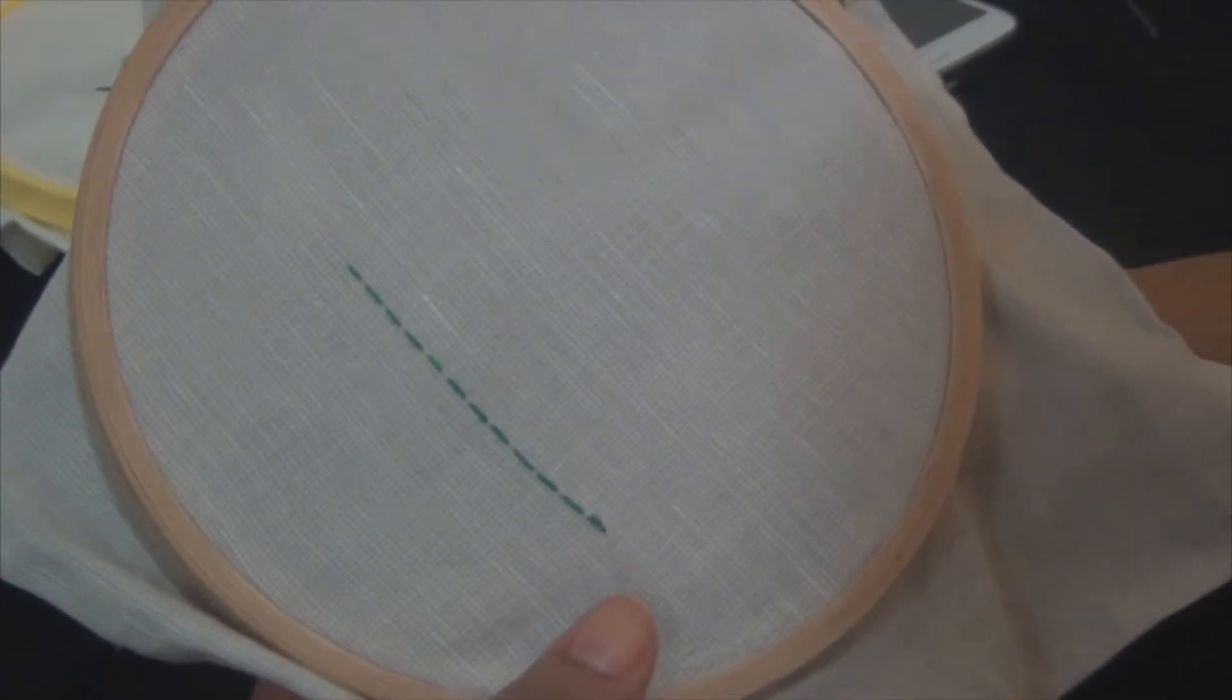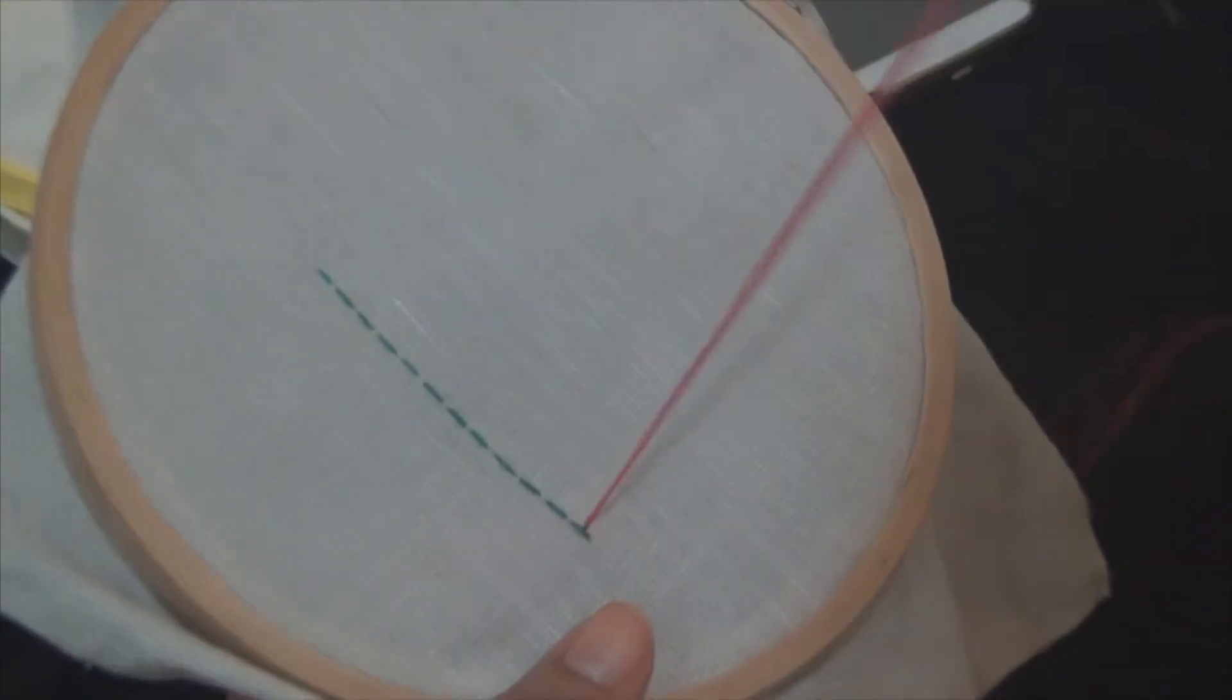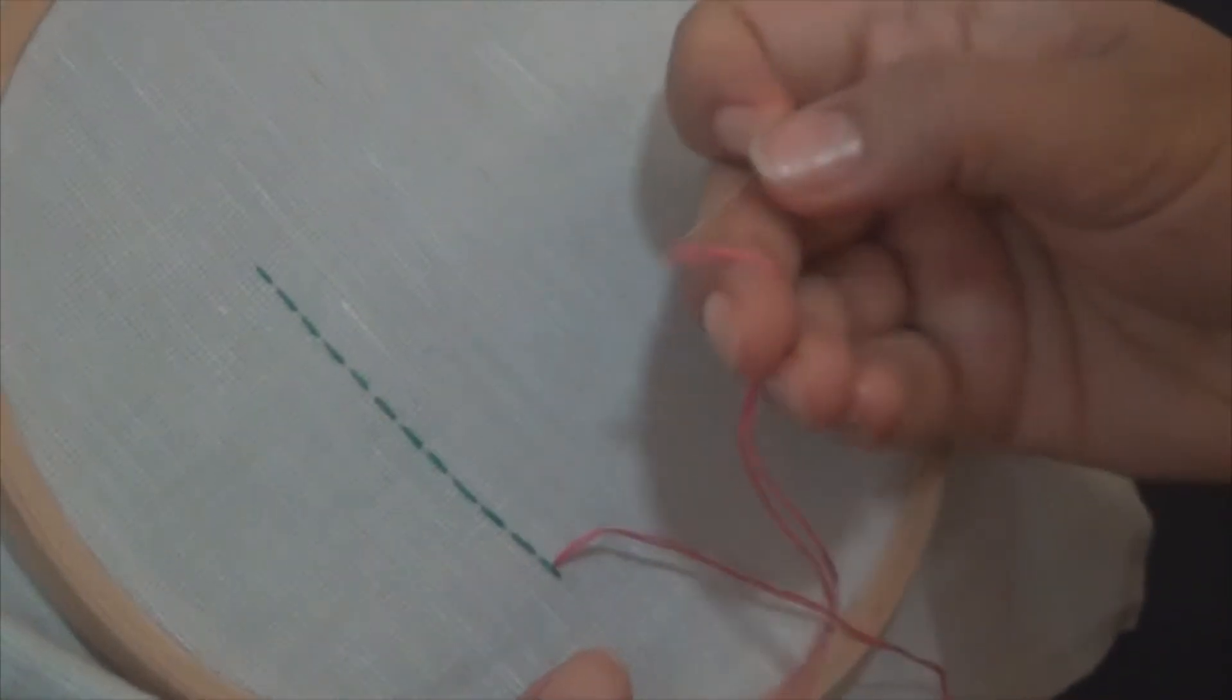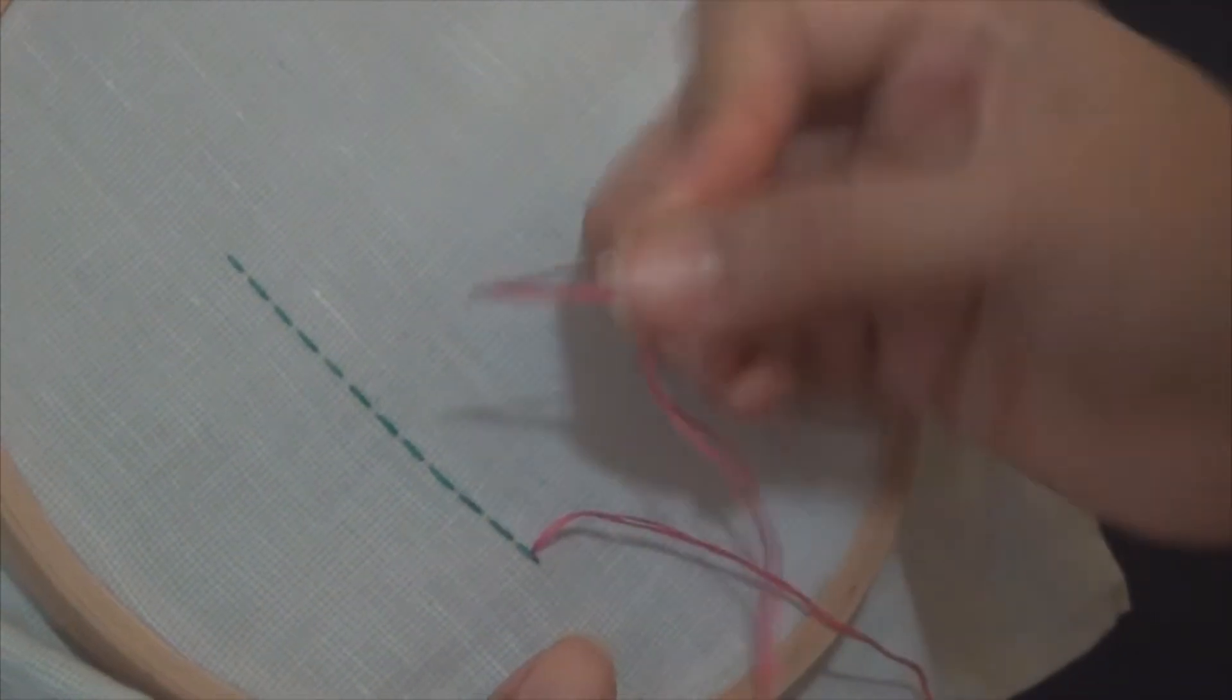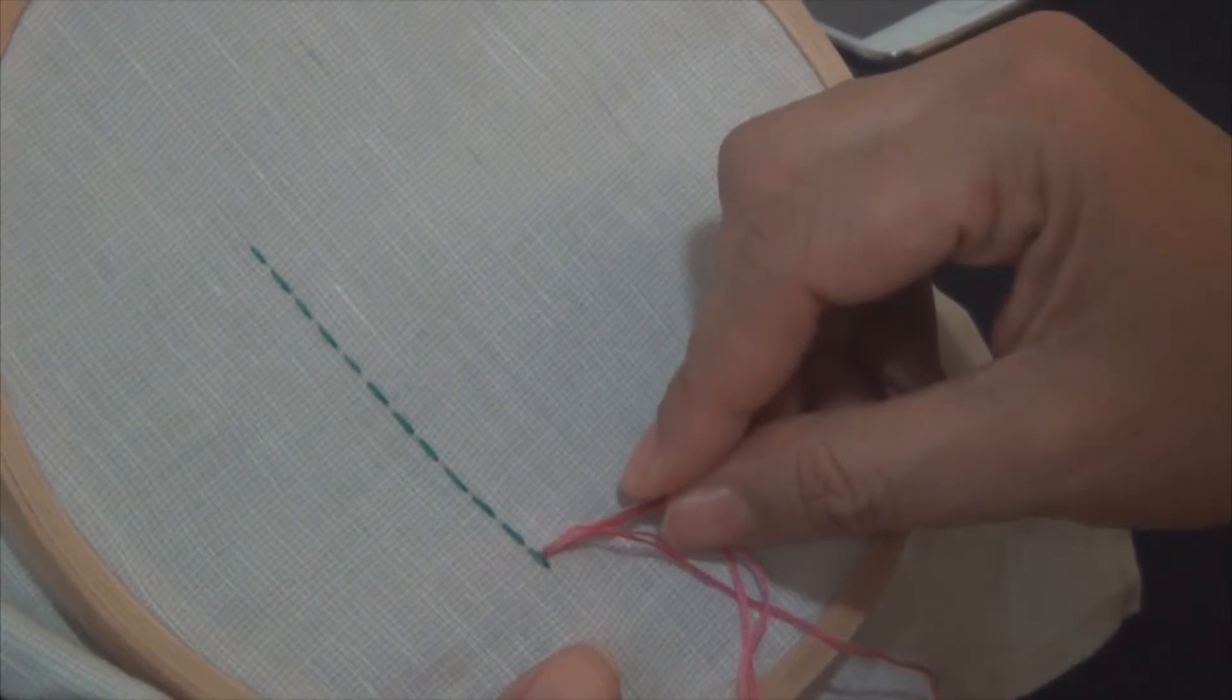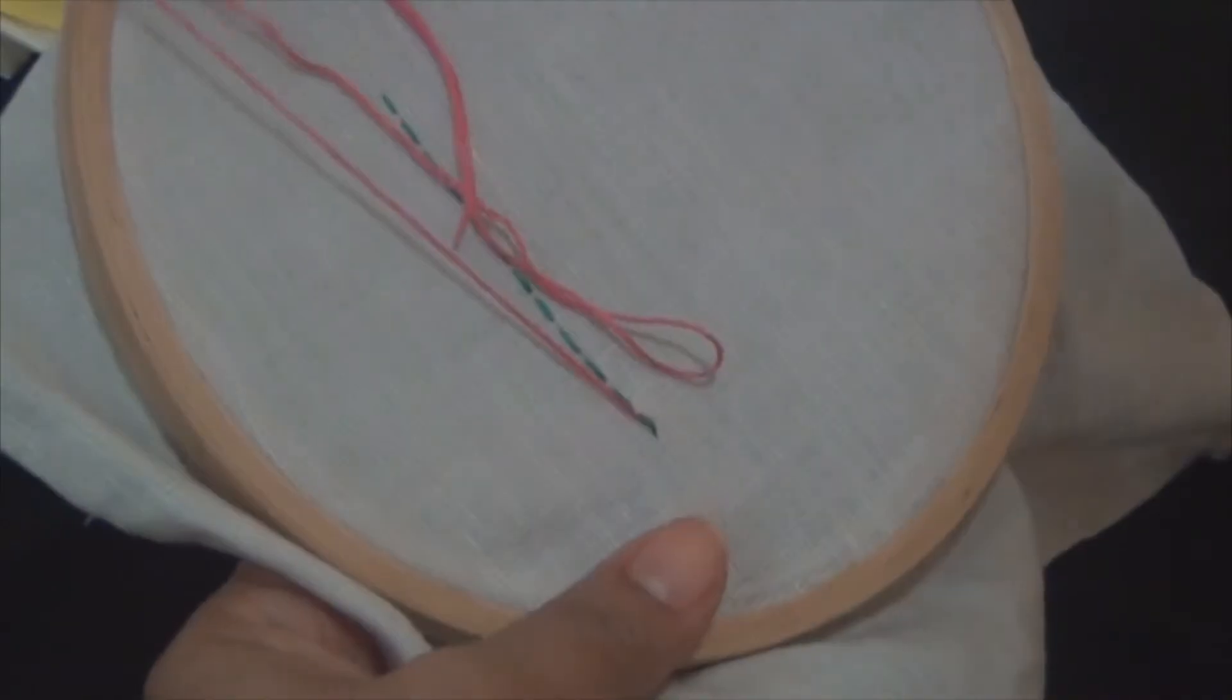We will bring up the needle in the center of the previous stitch. For this it's better that we use the back side of the needle to move the thread. So below this stitch we will go like this.